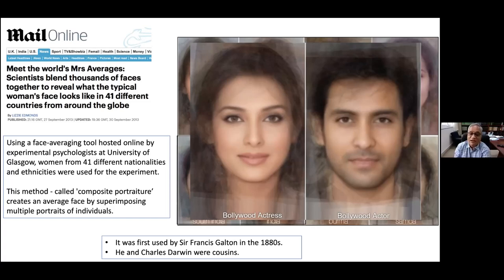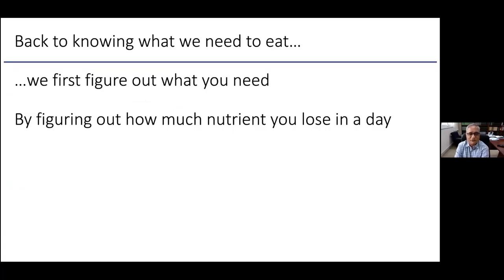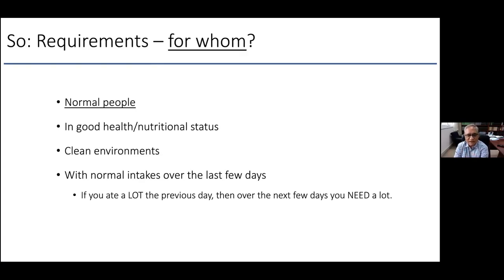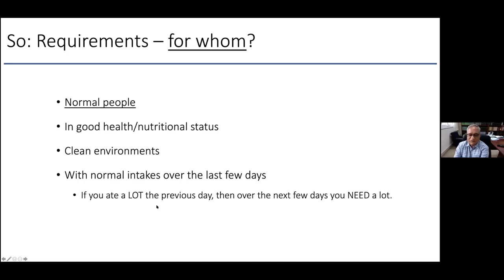So what's in a diet? It's an average. To figure out what we need to eat, we treat food as a chemical in a reductionist approach based on how much you lose in a day. We measure this in what we think are normal, healthy people from clean environments — not someone living in a slum with intestinal parasites. We also avoid people who have binged recently, since they'll be excreting excess nutrients, which would skew the measurement.